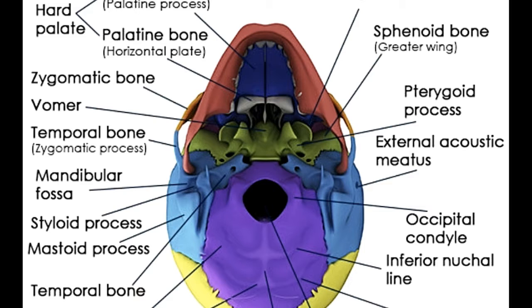Extending forward and upward from the foramen magnum is the basilar part. About 1 cm in front of the foramen magnum lies a pharyngeal tubercle, which serves as a site of attachment for the fibrous raphe of the pharynx. The longus capitis and rectus capitis anterior insert on either side of the middle line, whereas the anterior atlanto-occipital membrane is attached right in front of the foramen magnum. A shallow groove on the upper surface supports the medulla oblongata and serves as a site of attachment for the membrana tectoria. In children, the basilar part connects to the body of the sphenoid bone by a cartilaginous plate, which ossifies only after the age of 25 years.